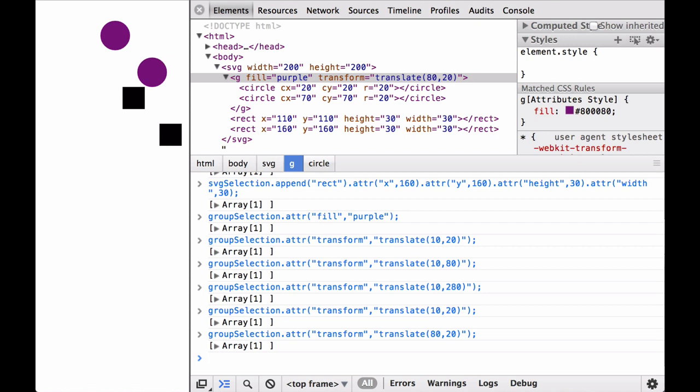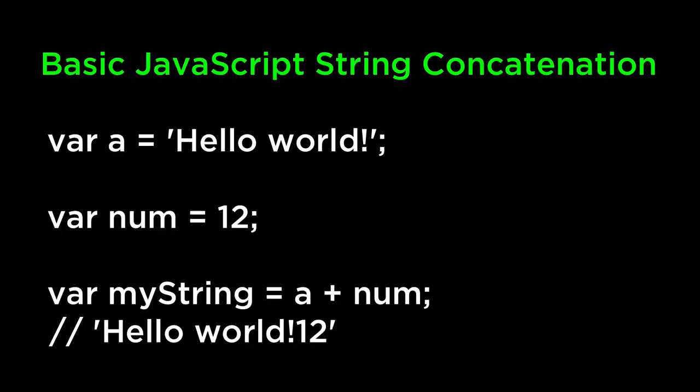Let's look at string concatenation before covering how to construct the translate string. JavaScript is very relaxed about the difference between strings and numbers. Some programming languages require you to declare a variable as a number or string beforehand, but not JavaScript. You can add numbers and strings together. If 'a' is a string and 'num' is the number 12, then 'a + num' concatenates them into a single string, which we can use to construct the translate string.